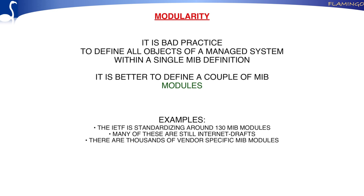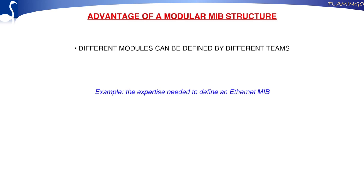What is the advantage of having this modular structure? First, you can have different people defining different parts of the MIB. Defining the management behavior of an Ethernet resource requires different expertise than defining it for a web server. So people with different expertise can define different modules.